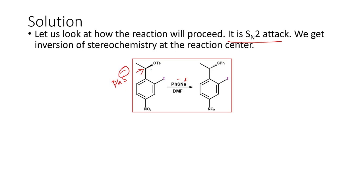When we look at that, the stereochemistry is inverted at the reaction center. The final product formed will be this one, because the thiolate anion cannot displace aromatic or nuclear-substituted groups. The iodine cannot be replaced. Similarly, the nitro group cannot be replaced by the thiolate anion.